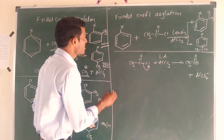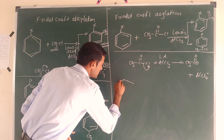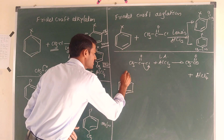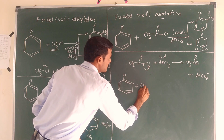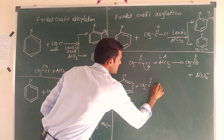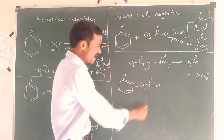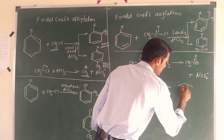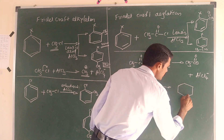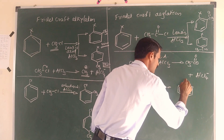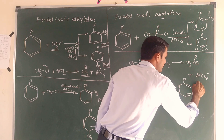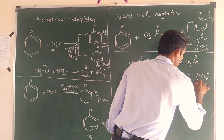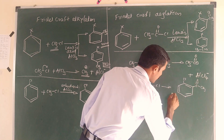Let's take an example. For example, chlorobenzene. We use chlorobenzene with CH3COCl — the acyl chloride. We use the acylium ion in this reaction. CH3COCl reacts with the benzene ring.